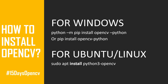To install OpenCV on Windows, open your command prompt and type: python -m pip install opencv-python. Alternatively, you can type: pip install opencv-python. If you're using Ubuntu or Linux, open your terminal and type: sudo apt install python3-opencv, and it will install the library on your system. Now let's see how to install it on a Windows machine.